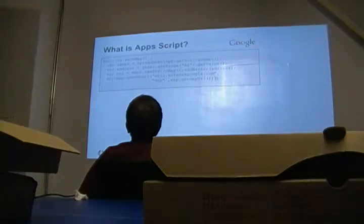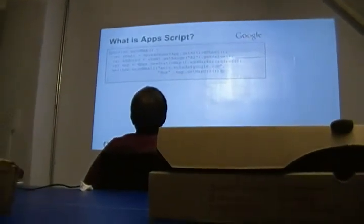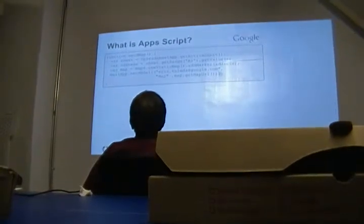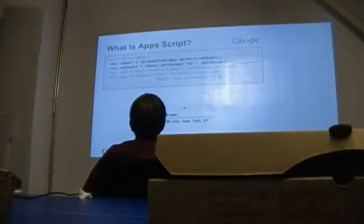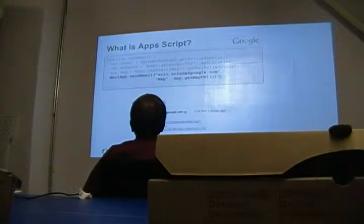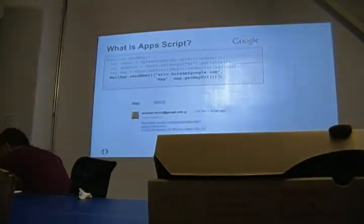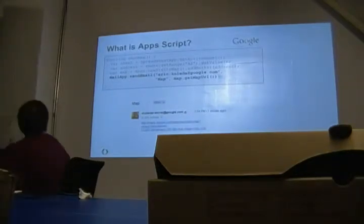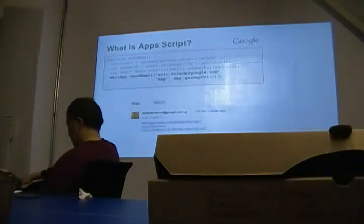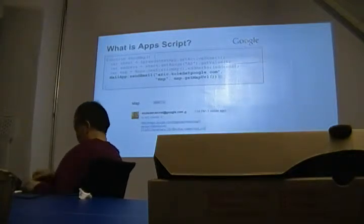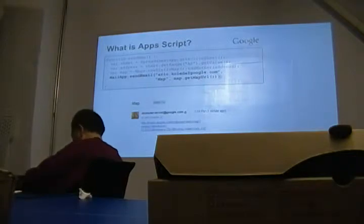So what does a typical script look like? This is very simple, straightforward JavaScript. Anyone who's done any programming in JavaScript will find this very familiar. What this is going to do is take a value from the spreadsheet, turn it into a static map, and then send an email with the link to that map. This is kind of a mashup — you're able to write four lines of code and mash up three different Google services: spreadsheets, maps, and Gmail — without having to register API keys, set up authentication, or make REST calls. That's really the big power of Apps Script.